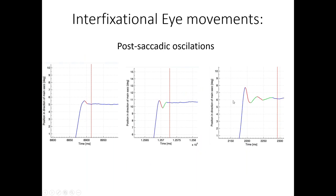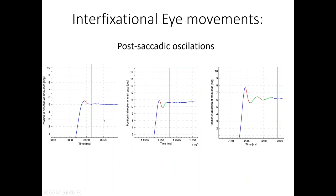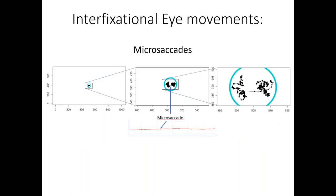Another thing that can occur are what's known as post-saccadic oscillations. You see these in the data here. This kind of little wobble at the end of the saccade, a kind of overshoot and then a rebound. There are all sorts of different types of post-saccadic oscillations. You get this sort of straightforward overshoot and rebound, that's quite common. Sometimes the rebound is so severe that there's a sort of secondary rebound, and in some eyes and some saccades you get really quite marked ringing. So that's another kind of movement that can occur within a fixation, these post-saccadic oscillations. And the final thing, the one that we're going to talk about most today, are microsaccades.